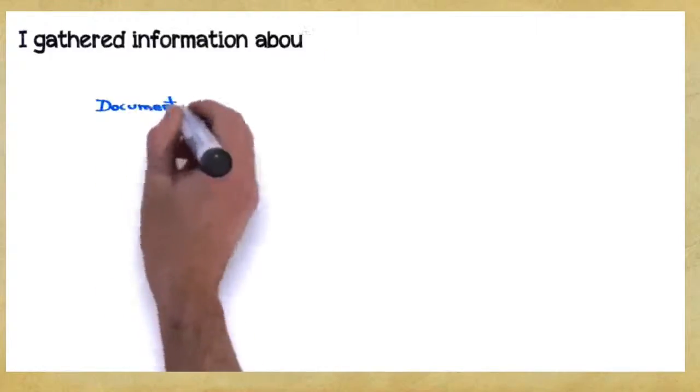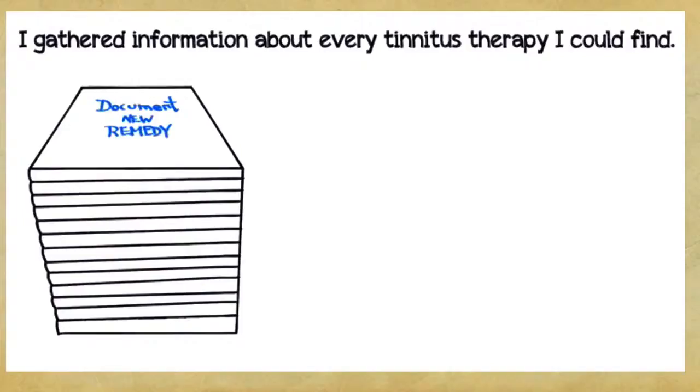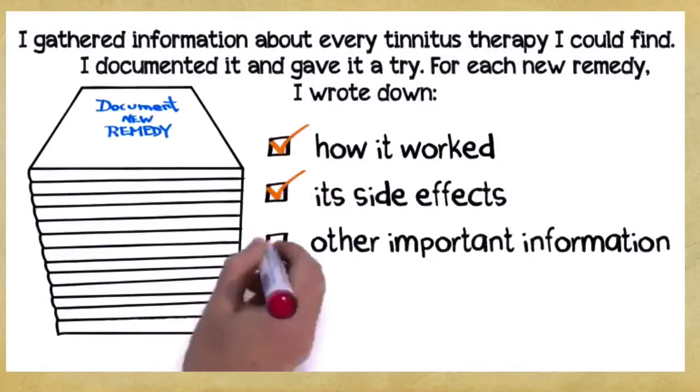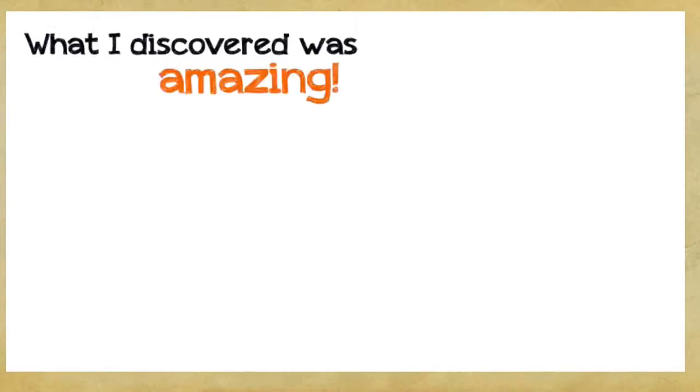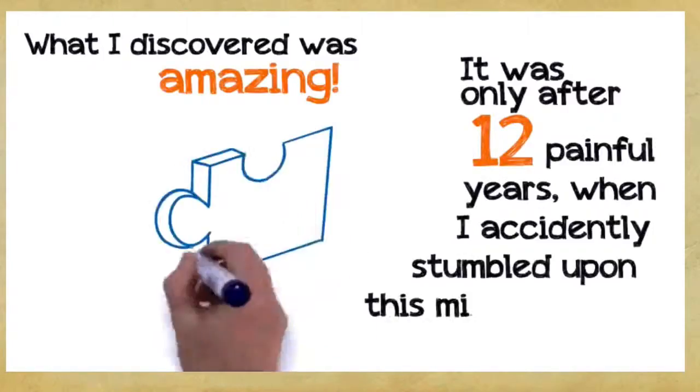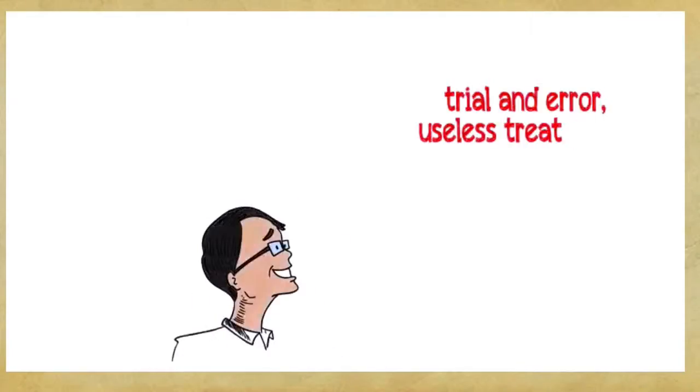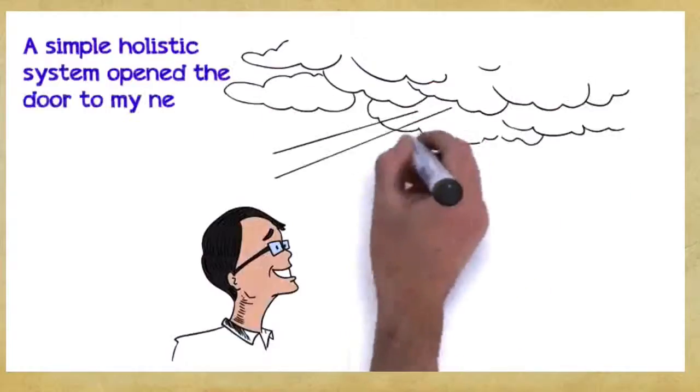I gathered information about every tinnitus therapy I could find. It didn't matter if one person or 100,000 people said it worked for them. I documented it and gave it a try. For each new remedy, I wrote down how it worked, its side effects, and other important information. Hundreds of therapies later, I began to look for a possible pattern. What I discovered was amazing. It was only after 12 painful years when I accidentally stumbled upon the missing piece to the tinnitus puzzle that my tinnitus completely disappeared. After countless rounds of trial and error, useless treatments, disappointments, and agony, a simple holistic system opened the door to my new tinnitus-free life.